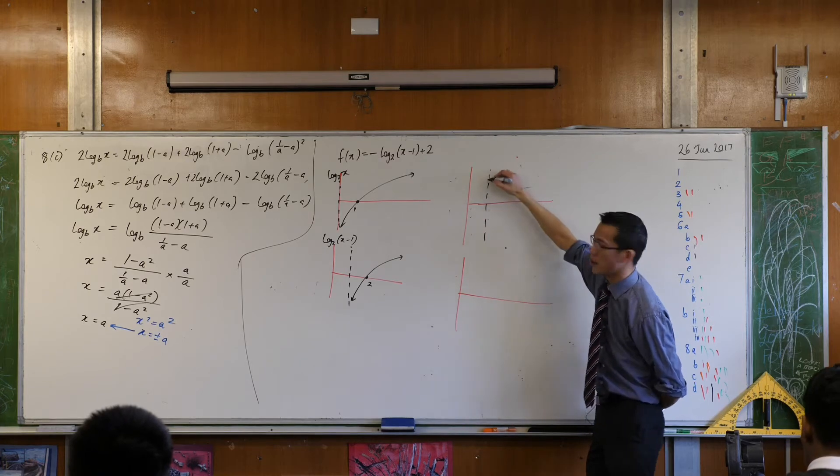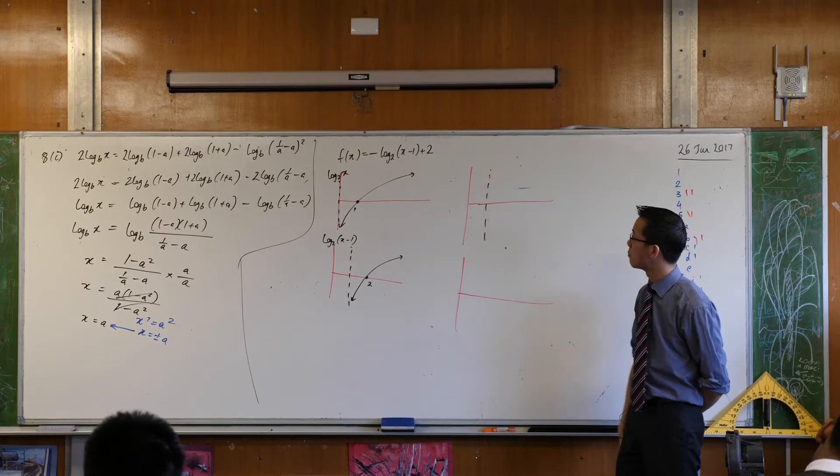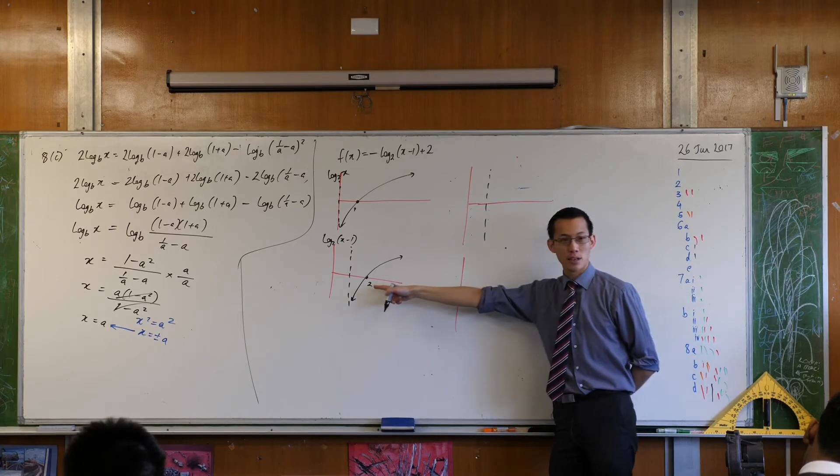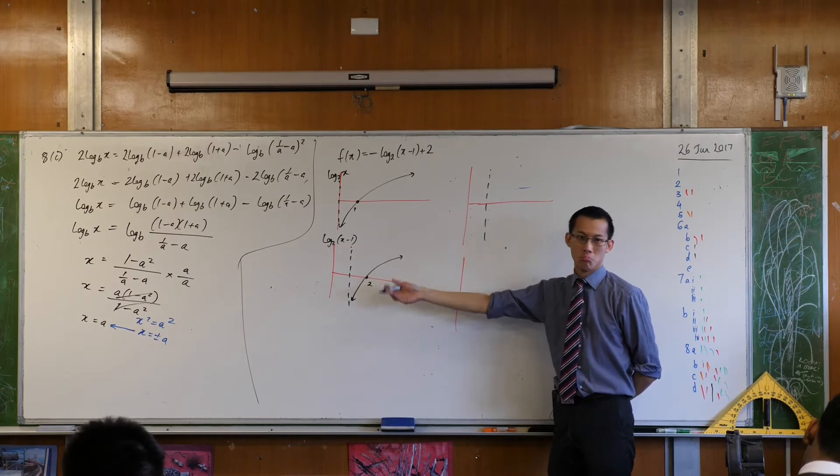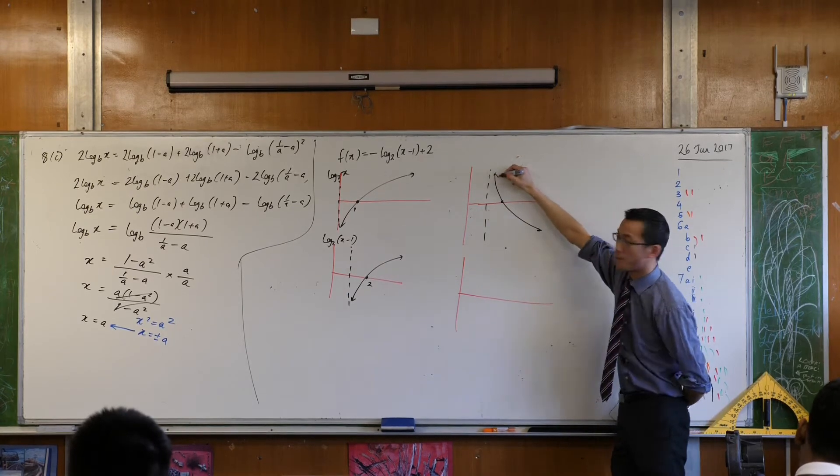So therefore, this vertical asymptote, if you flip that upside down, it's still where it is at x equals 1. And if you look at the intercept, if you flip that upside down, it's still at the same spot. All that changes is the stuff around it. Are you okay with that?